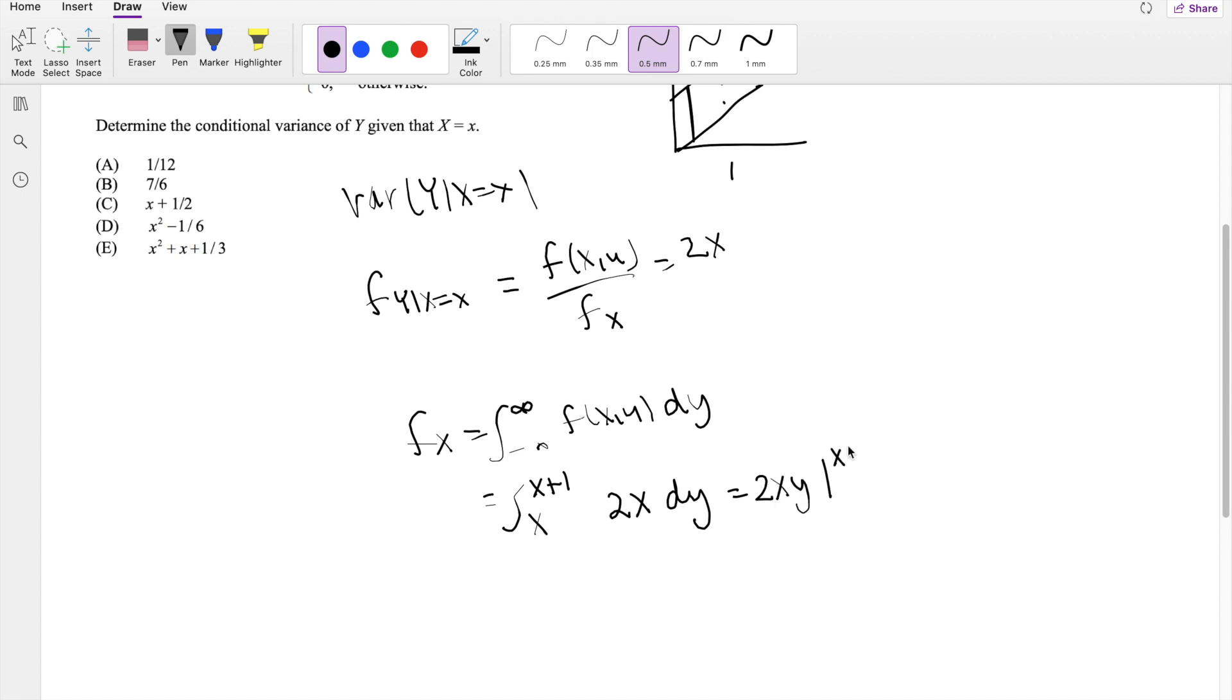Y integrating from X to X plus 1. So then this is equal to 2X times (X plus 1 minus X). So the X's actually cancel out, so you're left with just 2X.